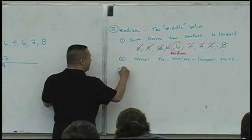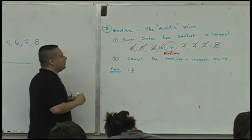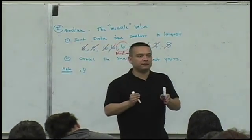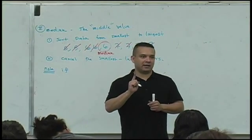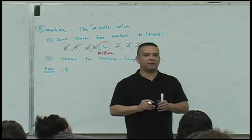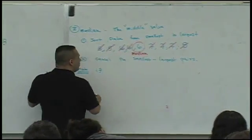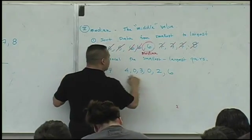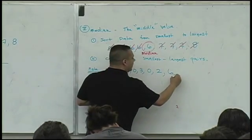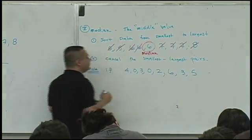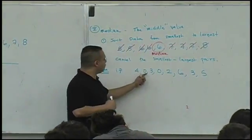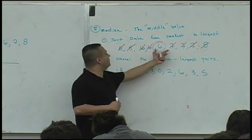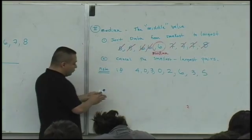If this was an odd number of data, guaranteeing that when you do this cancellation, you're going to be left with one value standing. What happens if there's an even number of data? What if our data looked like this? Four, zero, three, zero, two, six. Let's say three and five. Notice, how much data do we have? One, two, three, four, five, six, seven, eight. An even number of data values, where here you had an odd number. One, two, three, four, five, six, seven, eight, nine. Guaranteeing you have a middle value. So if I go through the process now, sort these values.